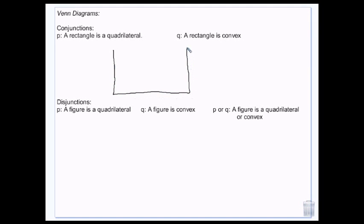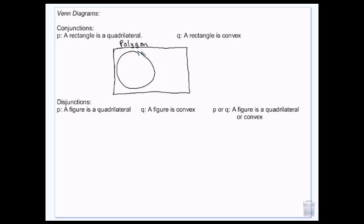We have a rectangle representing the universe we're in. In this case we're talking about shapes, so we're in the polygon universe. Inside the polygon universe there are some galaxies — two galaxies that overlap. Galaxy one is quadrilaterals, and galaxy two is convex figures.